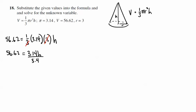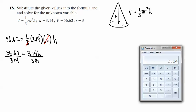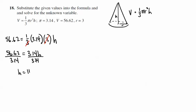To solve for h, we're simply going to divide both sides by 3.14. And so back to our calculator. Clear. We have 56.62. Divide that by 3.14. And so the height is going to be 16.65. h is equal to 16.65. And that's going to do it for number 18.